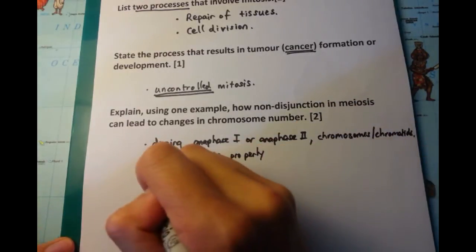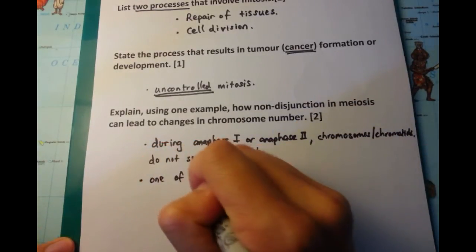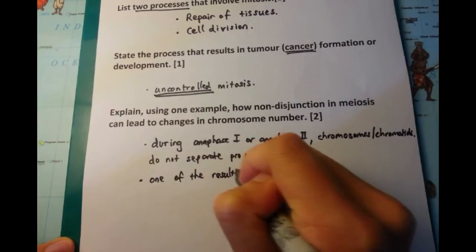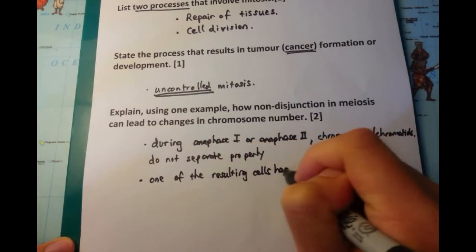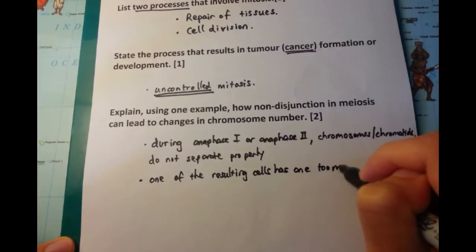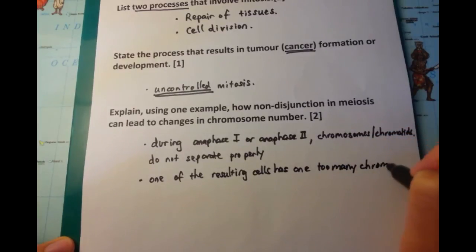So in the case of Down syndrome, for example, you have the chromosome 21 splitting, well they're meant to split anyway. Instead of splitting properly, you have two copies of the chromosome 21 going to one particular side and zero copies going to the other side.